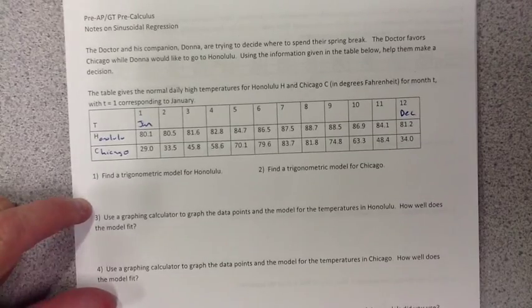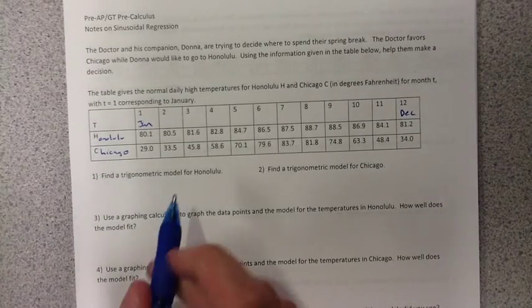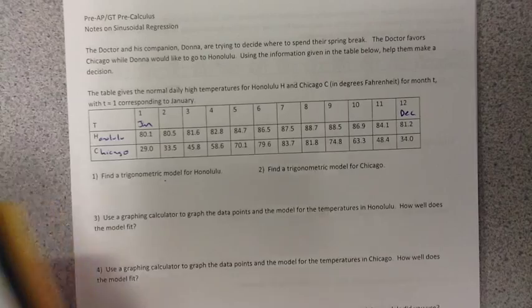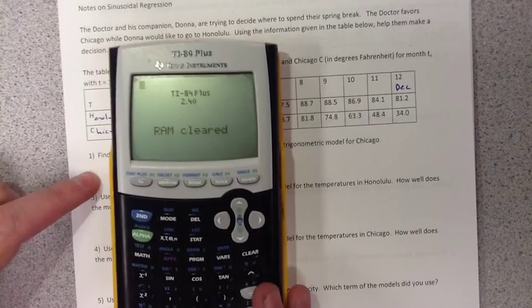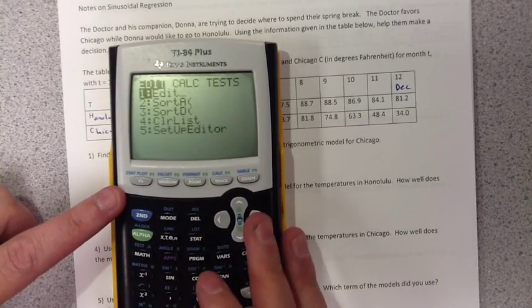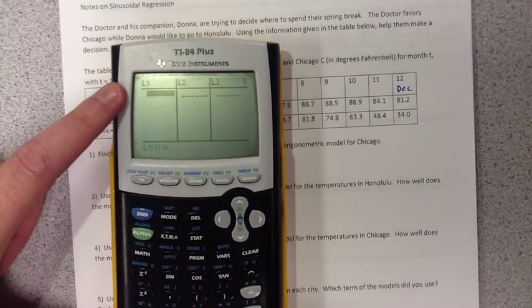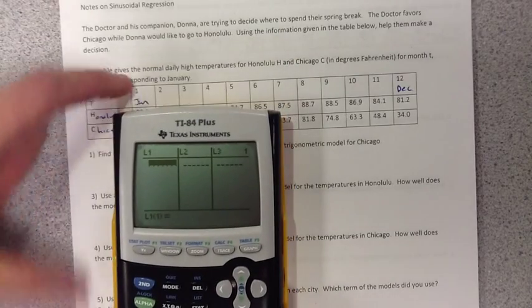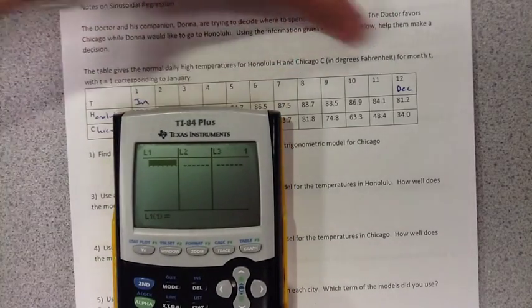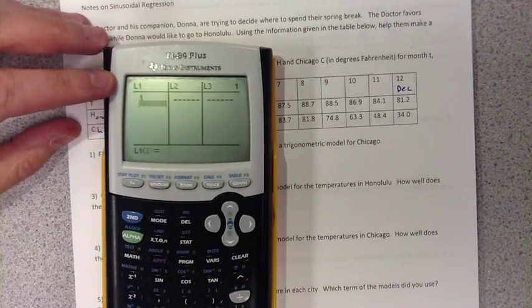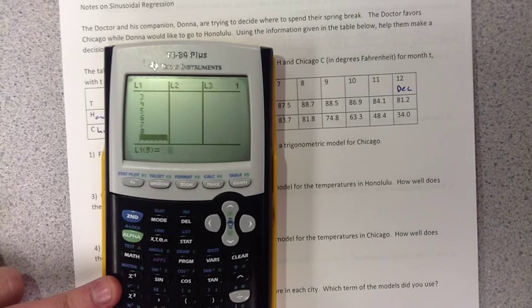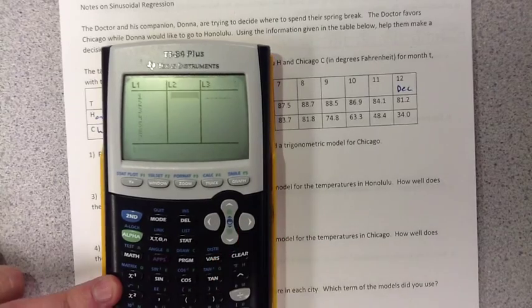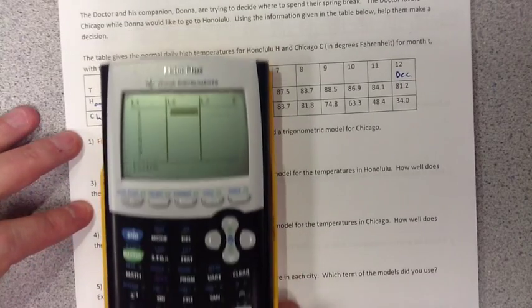So what we're going to do is make a trigonometric model for Honolulu. Very easy to do. In your calculator, you've done this before, you go to Stat, Edit. In L1, we're going to put the months of the year, January through December.